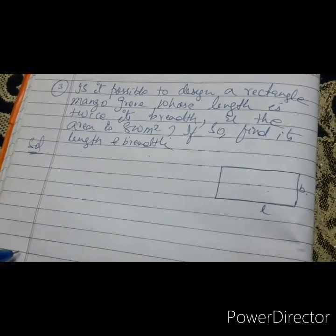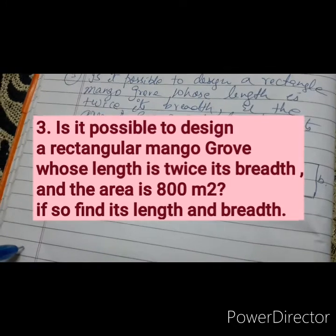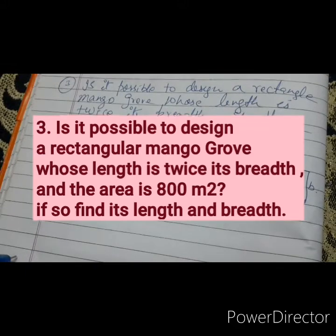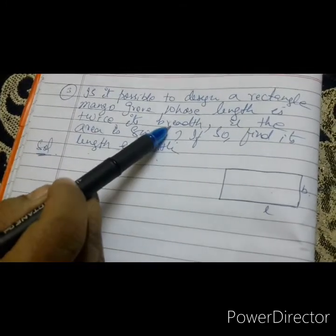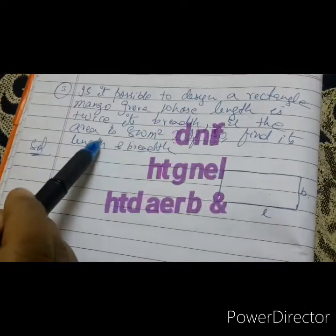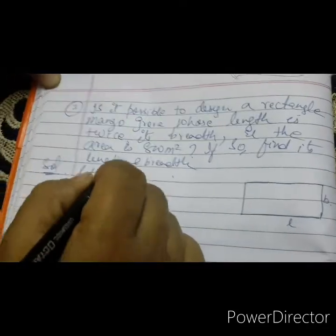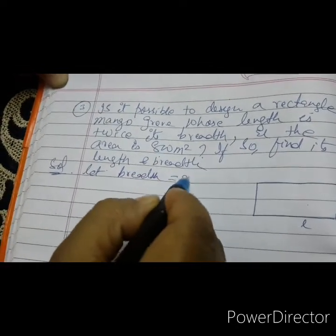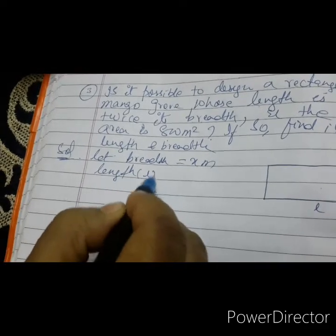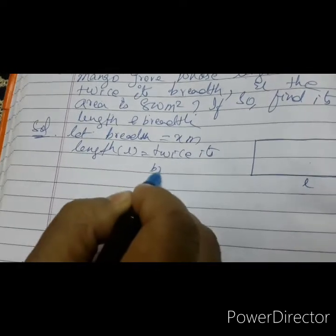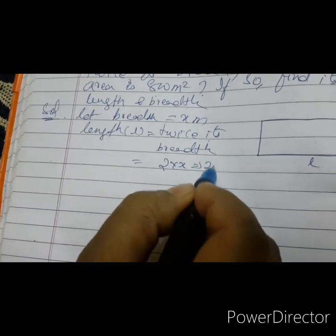Next problem, students. Third one. Is it possible to design a rectangle mango grove whose length is twice its breadth and the area is 800 metre squared? If so, find its length and breadth. We don't know length and breadth; we have to find both. Let breadth equals to x metre. Length is twice its breadth — length L equals to 2 into x, that is 2x metre.